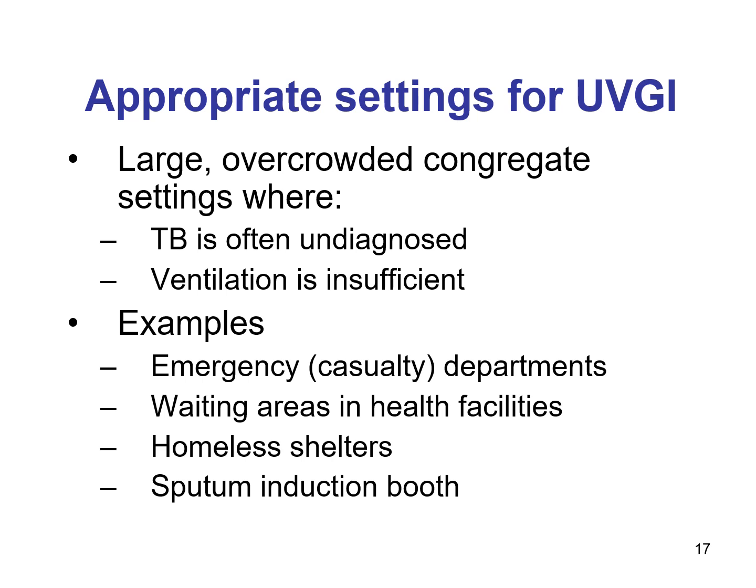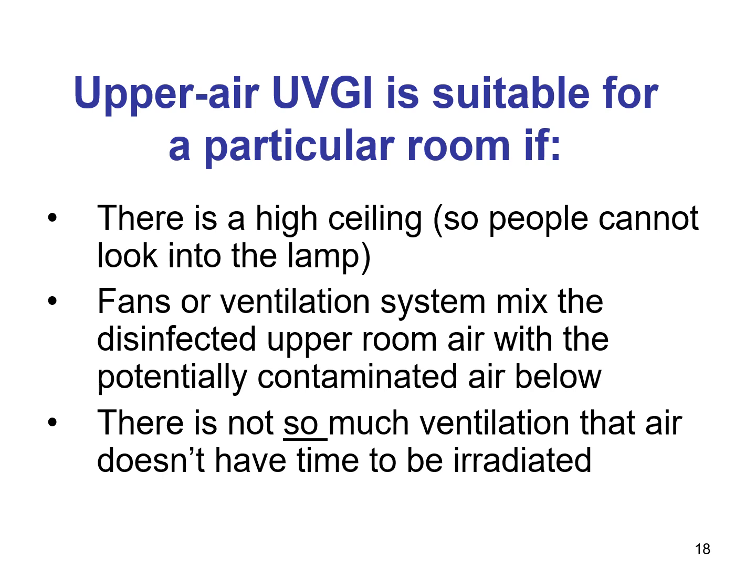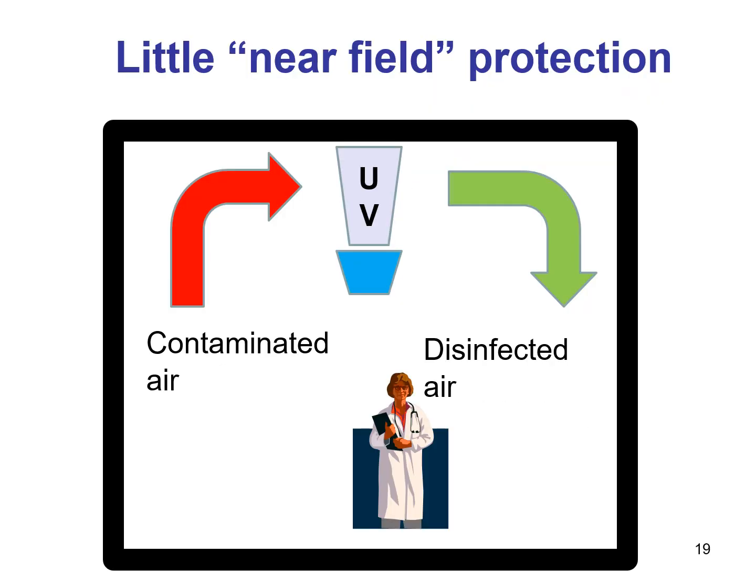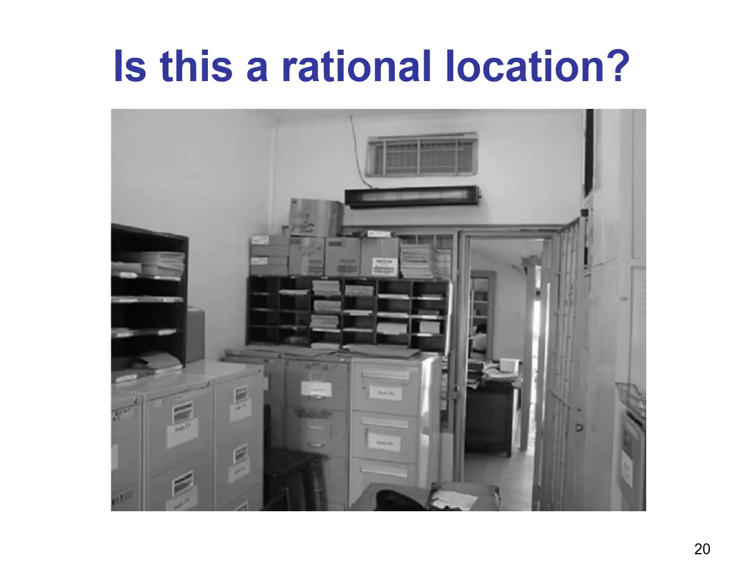Proper settings for UVGI include large, overcrowded congregate settings where TB exposure is possible and ventilation is insufficient, such as casualty departments, waiting areas, and homeless shelters. Upper air UVGI is generally suitable for rooms with high ceilings so people cannot look directly into the lamp. Fans or ventilation systems must mix the disinfected upper room air with potentially contaminated air below. UVGI cannot protect a healthcare worker from airborne infection occurring at very close proximity to the patient — referred to as the near field — although upper UVGI helps reduce the overall room concentration of droplet nuclei.